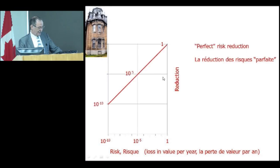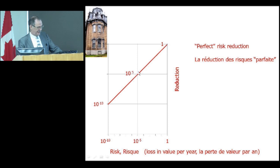On the vertical axis I'm plotting the reduction of risk. If we had a perfect risk reduction — all of our options solved all of the risks — we would have a 45-degree line. Risks scaled at one means we lose everything in a year; risks where we lose 10 to the minus 5 are perfectly solved. Now I'm going to show you an animation of what I'm talking about: a 10 to the minus 10 risk, a 10 to the minus 5 risk, and if we solve that risk with an option, it appears exactly on that diagonal line.